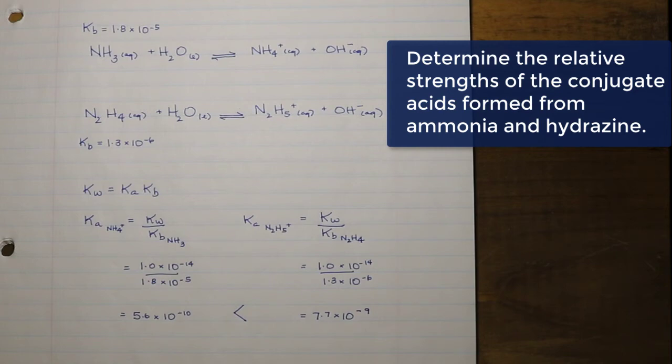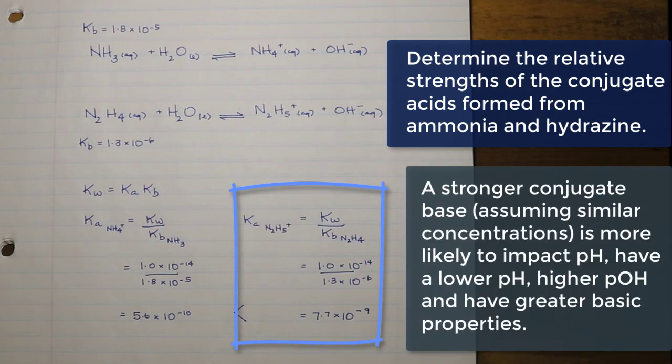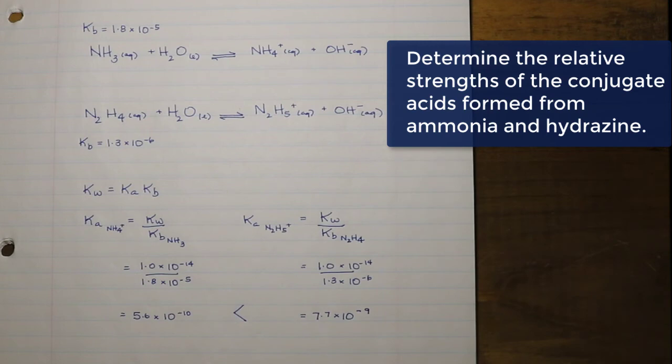This means that the stronger of the conjugates is the conjugate of the hydrazine. So in order to figure out which of these two is stronger, we have to compare the Ka of the conjugates. Now it is worth noting that something that is a stronger base is going to have a weaker acid, and something that is a weaker base is going to have a stronger acid, and vice versa. But if you're going to analyze it appropriately, you should complete these calculations in order to figure out which of these two is going to be the stronger ion.